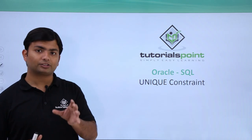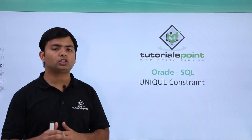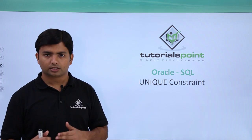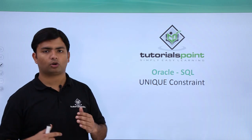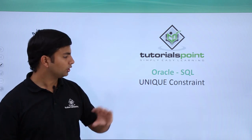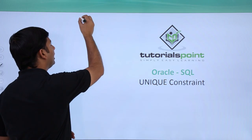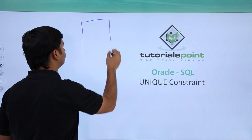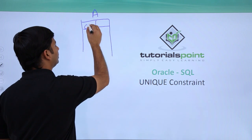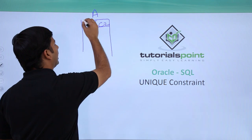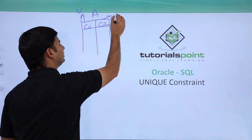But if you pass multiple columns with the unique constraint at the table level, it will not check the uniqueness of a single value. Instead, it checks the uniqueness of the whole combination of all the columns on which you have applied it. For example, consider a table A with two columns C1 and C2, with the unique constraint applied to each column separately.